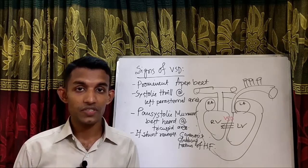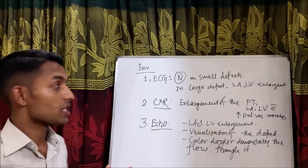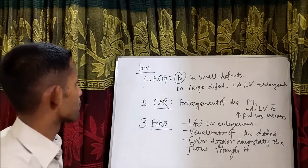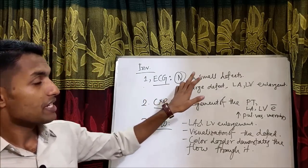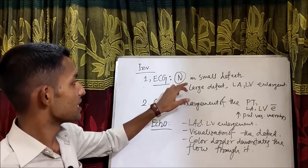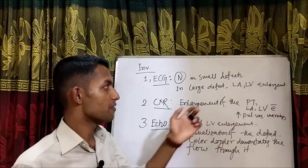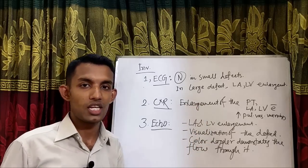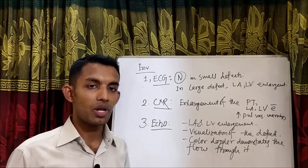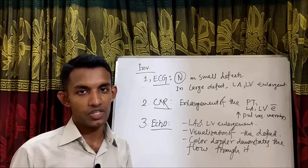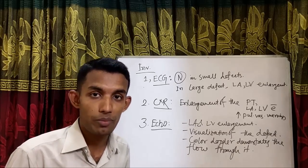Now the investigations and treatment of VSD. For investigations, the first one is ECG. In ECG, if it is a small defect we may get a normal ECG, and in case of larger defects we may get left atrium and left ventricle enlarged. In case of chest X-ray, we may get an enlarged pulmonary trunk, left atrium enlarged, left ventricle enlarged, and increased pulmonary vascular markings.